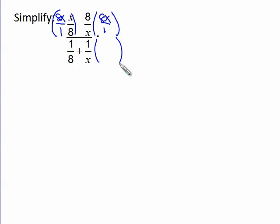but I also do it to the bottom. That way I'm multiplying by some form of the number 1. So this is 8x over 1 as well. And then distributing it across my plus, that way everybody gets it, I get 8x over 1 here as well.